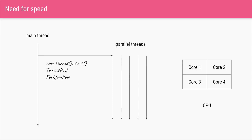Most of the compute devices we have today have more than one core. A typical desktop computer has four cores, and on servers we generally have 16 cores, 32 cores, or more. To take advantage of this much compute power, we create multiple parallel threads in our application.